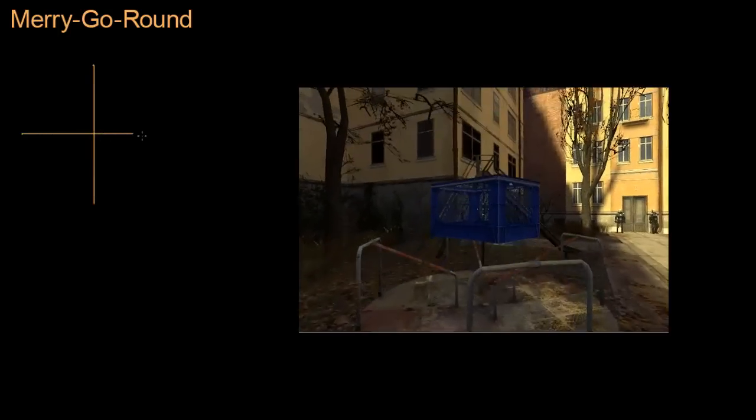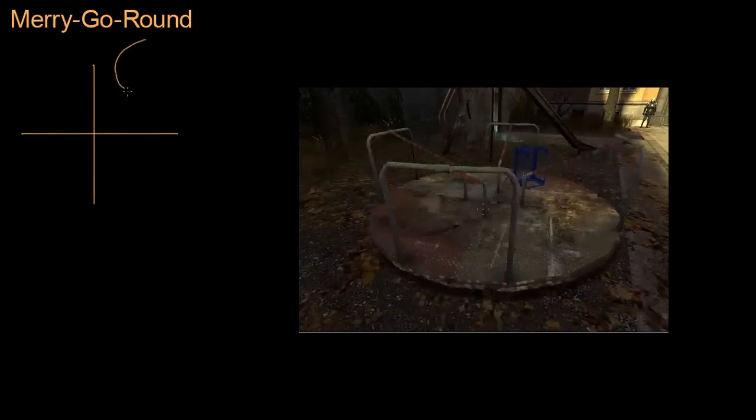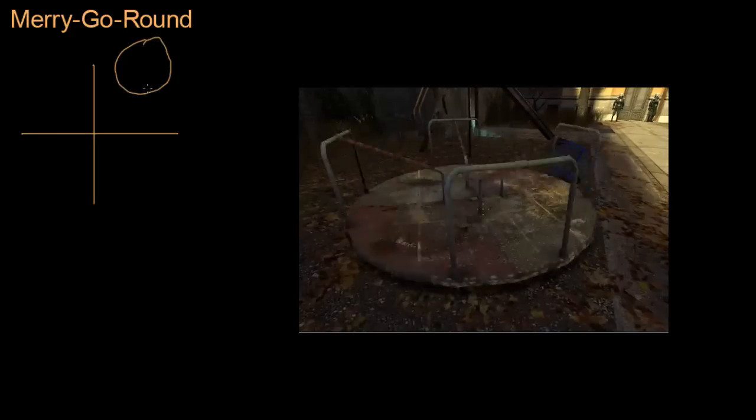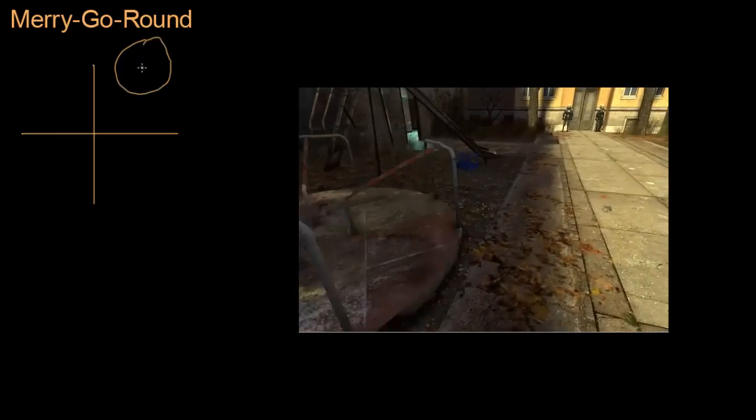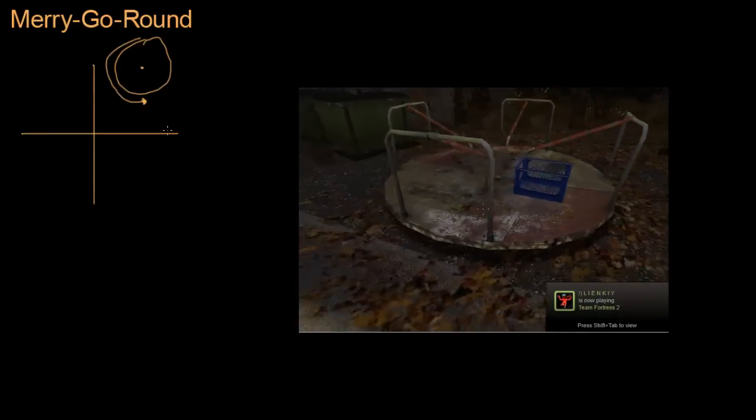In the game Half-Life 2, early in the game, there's a playground, and in this playground there is a merry-go-round, which in Britain is called a roundabout, which is a child's toy, circular like this. We're looking from the top down, and it's got a pivot right here, and it just rotates around in this direction.